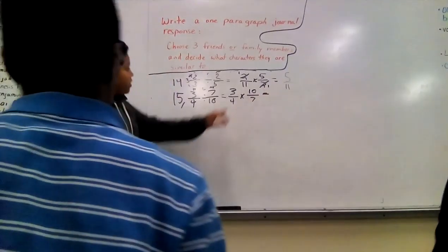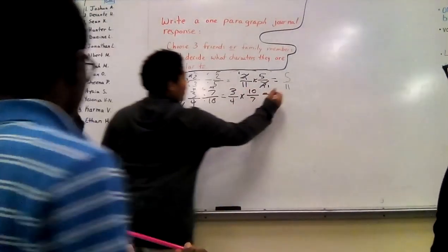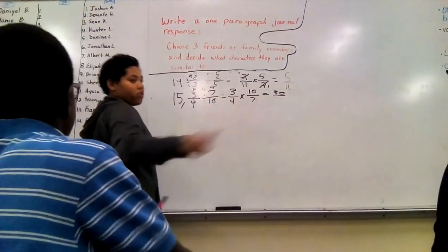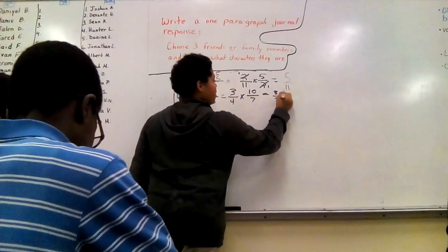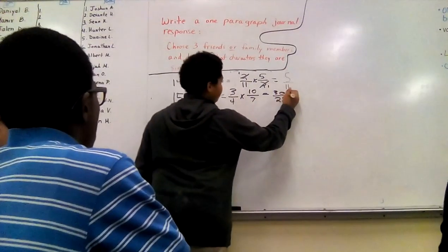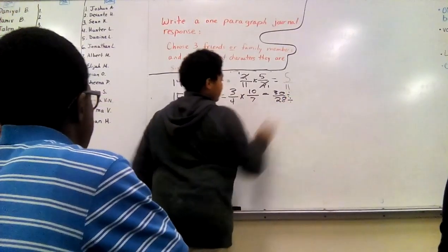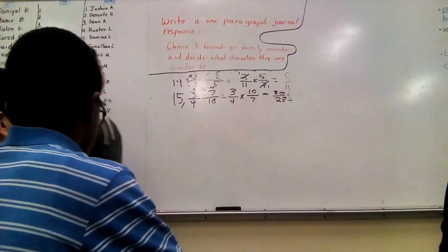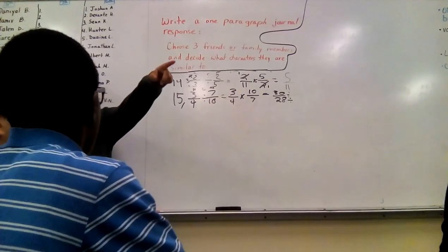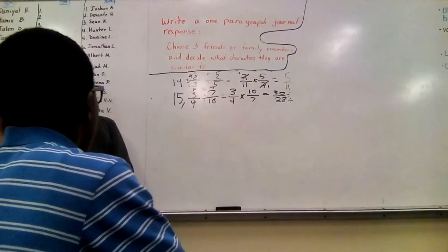Okay, so now we're going to do 3 times 10 is 30, and 7 times 4 is 28, right? So we have 28. So what can this be divided by? They're both even numbers, so what can it be?